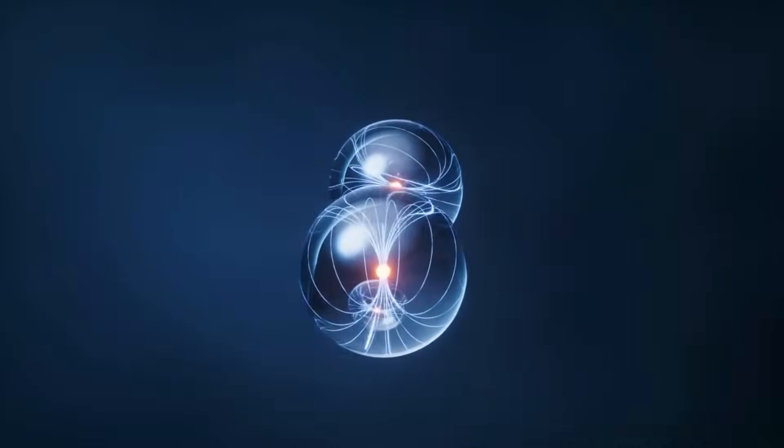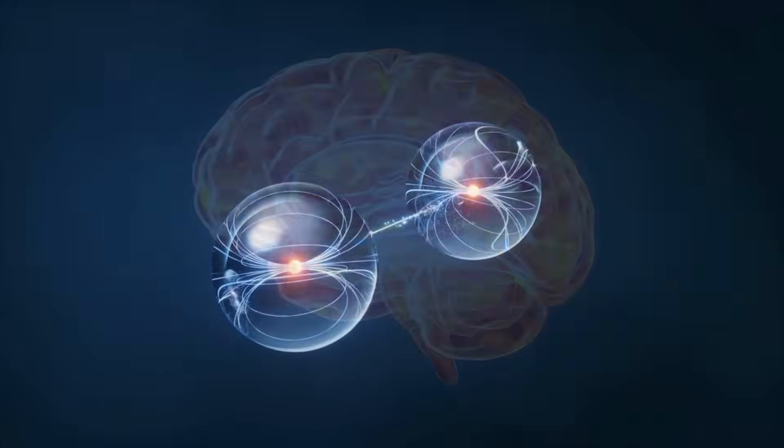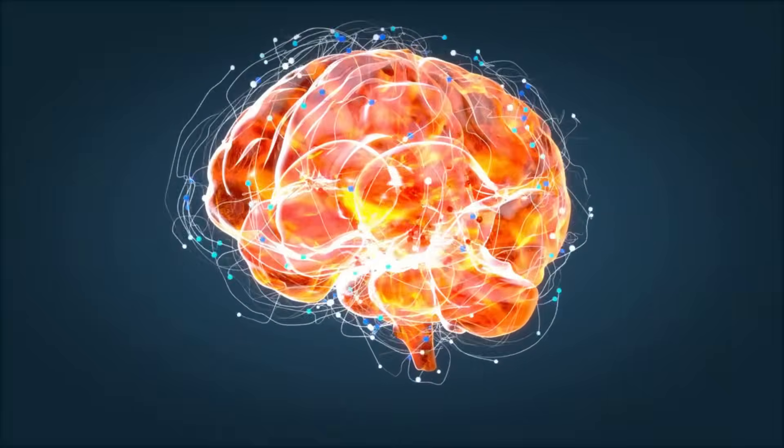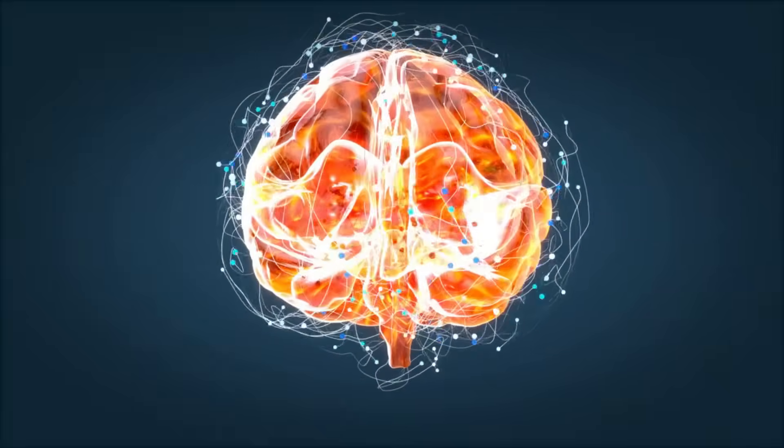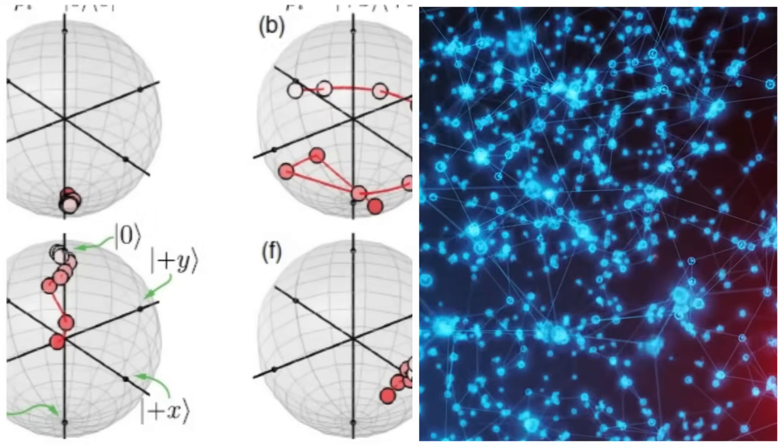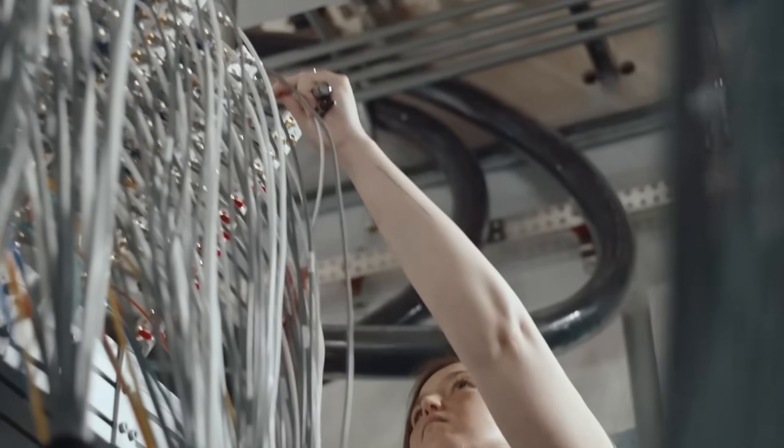Think about it. The observer effect in quantum physics, where observation collapses the wave function, only works when a conscious agent is involved. Not a camera, not a sensor. A conscious observer. Now imagine a system of qubits that only collapses when a human is present, not just physically, but mentally present. That's exactly what the Google team observed.